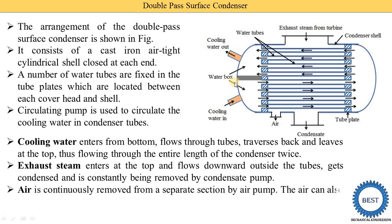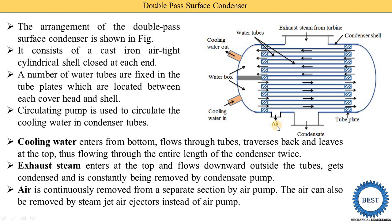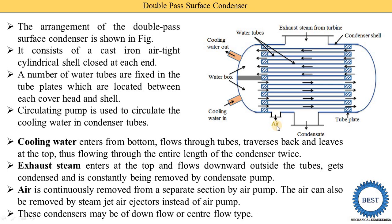Air is continuously removed by an air pump through a separate suction vent. The air can also be removed using a steam jet air ejector instead of the air pump. This condenser may be of down flow or center flow type. In down flow type, the air vent is provided at the bottom of the condenser. In center flow type, the air vent is provided at the center of the condenser, so air is removed from the center.